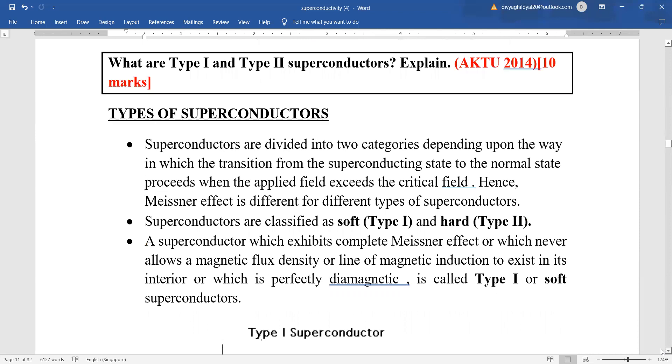Now type 1 and type 2 superconductors are the most important heading in this unit for a 10 mark question. Type 1 and type 2 superconductors are basically divided into two categories depending upon the way in which transition from superconducting state to normal state proceeds when the applied field is exceeding the critical field. Type 1 are the simple or the soft ones and type 2 are the hard ones.